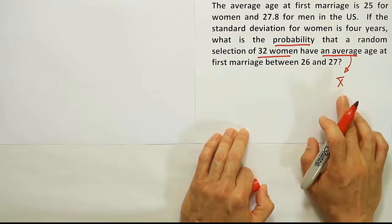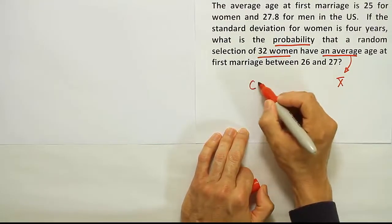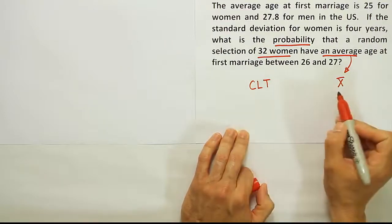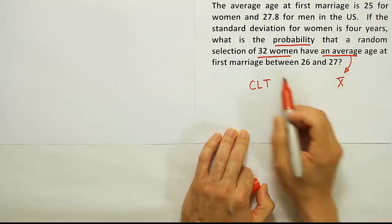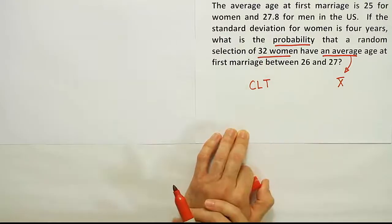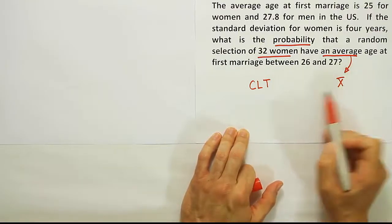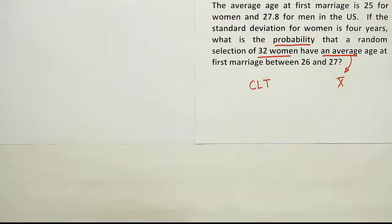Well, if we're dealing with x-bar, we have something called the central limit theorem. That tells me that, essentially, x-bar is normally distributed, or at least approximately normally distributed, when the sample size is greater than 30. So if I see this sample size of 32, it's an indication to me that if the problem is about x-bar, I can use the bell curve.